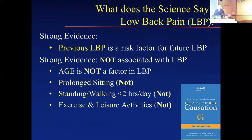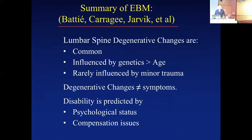There is strong evidence that previous low back pain is an independent risk factor for future low back pain, particularly in an occupational setting. Age is related to progression of degenerative changes but not to pain. Prolonged sitting, standing, and walking, as well as exercise and leisure, are not associated with degenerative changes. A summary of the evidence-based medicine from these three giants: lumbar degenerative changes are common, influenced by genetics more than age, and rarely influenced by minor trauma. Degenerative changes do not equal symptoms, and disability is predicted by pre-injury psychosocial status and compensation issues.